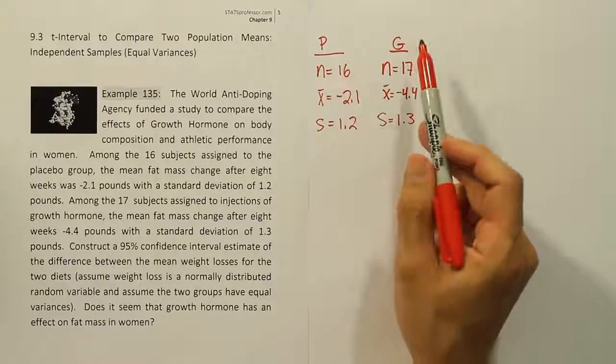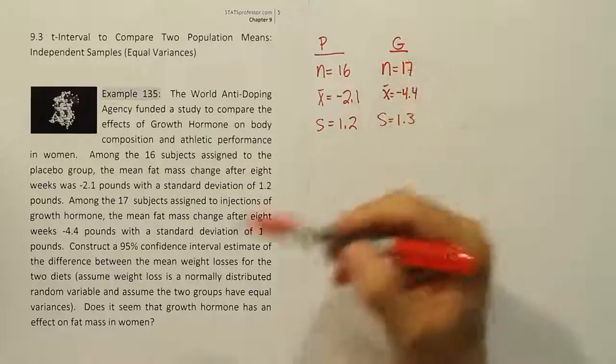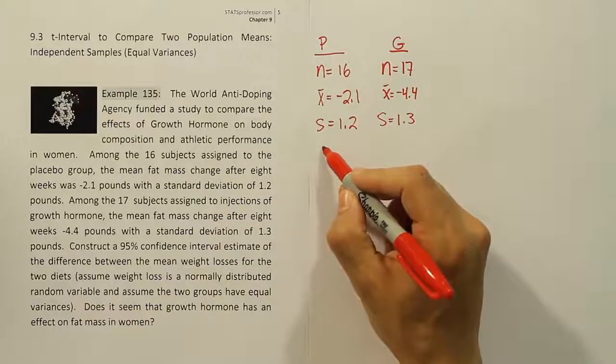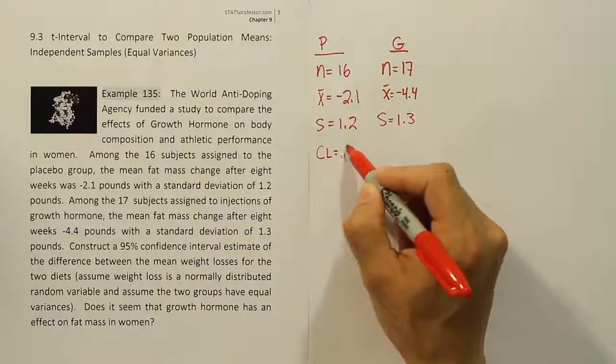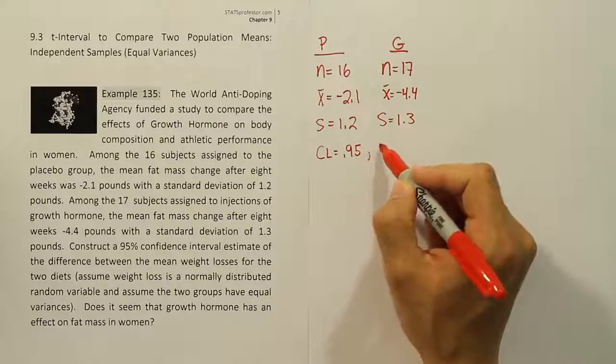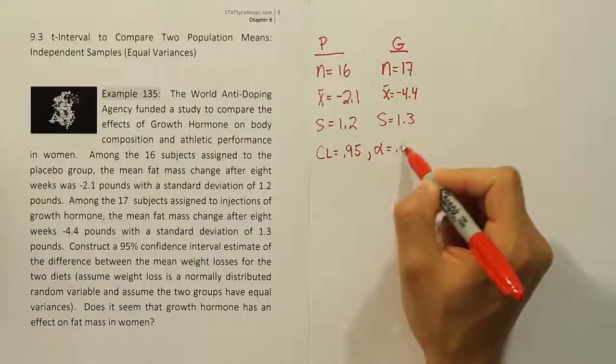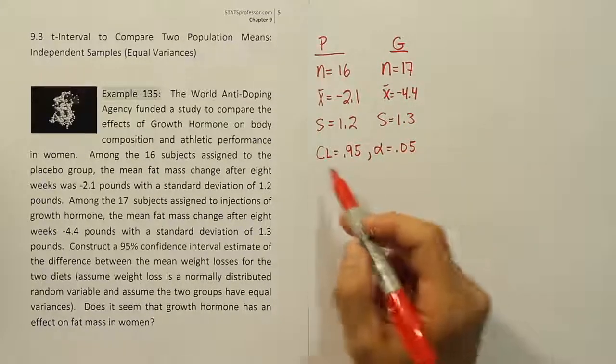Okay, so we have the placebo group, the growth hormone group, and now we have a confidence level of 95%. The confidence level is 0.95. That leads to the idea that alpha is 0.05. So we have all the data.